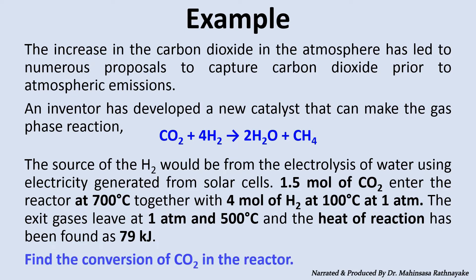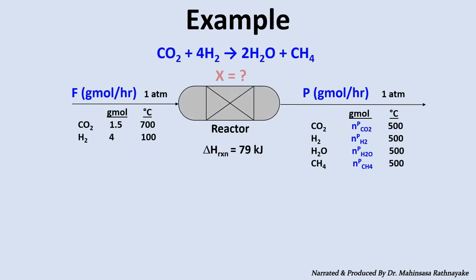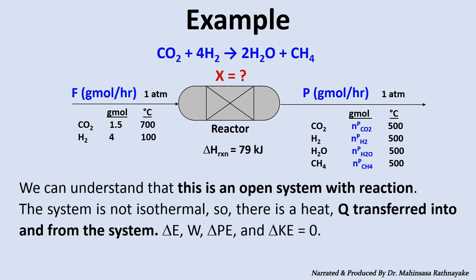Find the conversion of carbon dioxide in the reactor. Before solving any energy balance problem, we must try to understand the system and the given data. From the description, we can understand that this is an open system with reaction. The system is not isothermal, so there is heat — capital Q — transferred into and from the system. If we apply the energy balance equation for this system, delta E, W, delta PE, and delta KE will be zero. The final energy balance equation is an enthalpy balance: delta H is equal to Q.